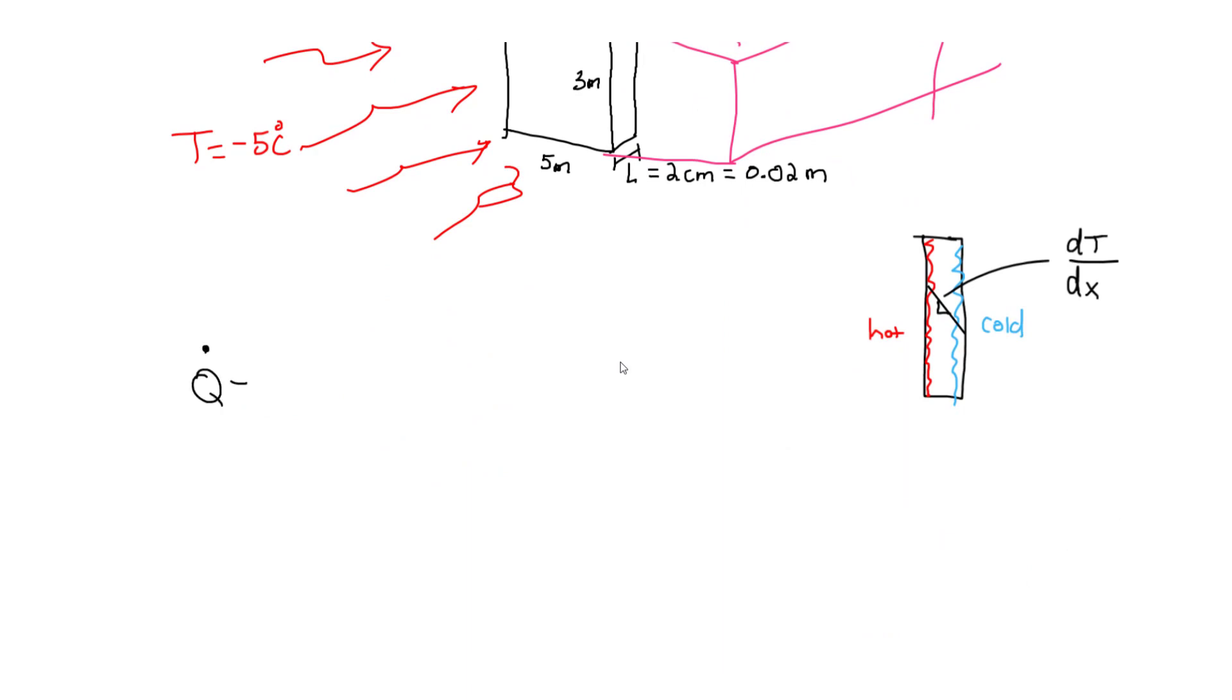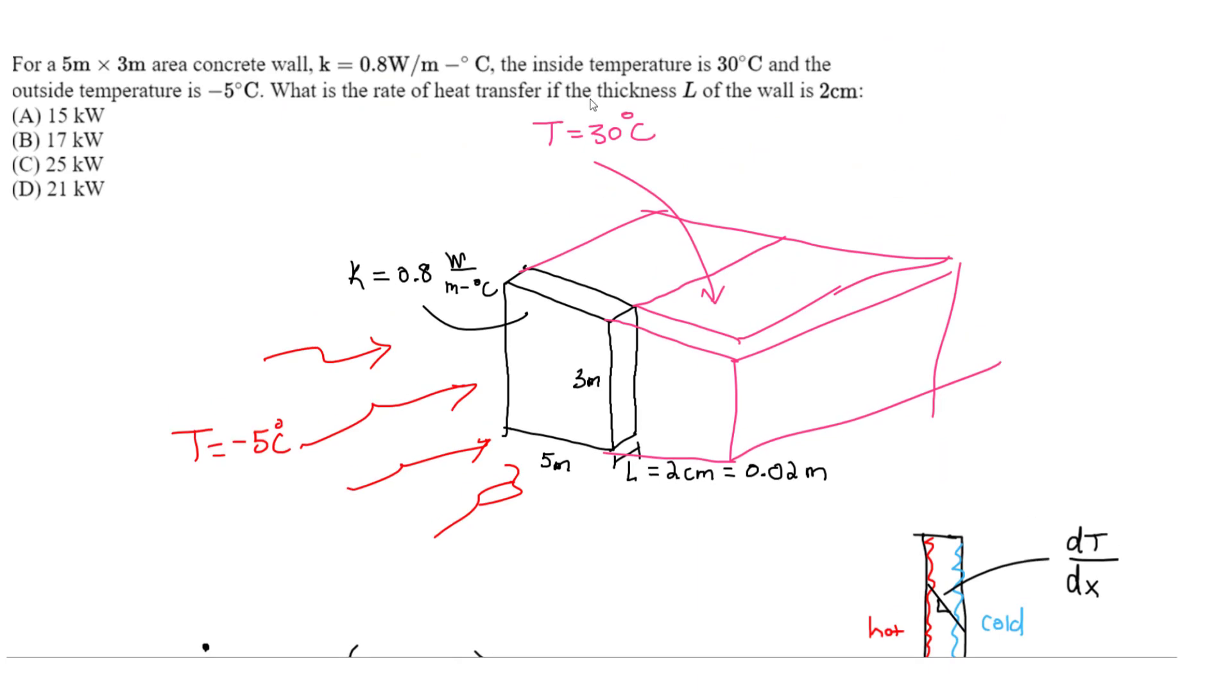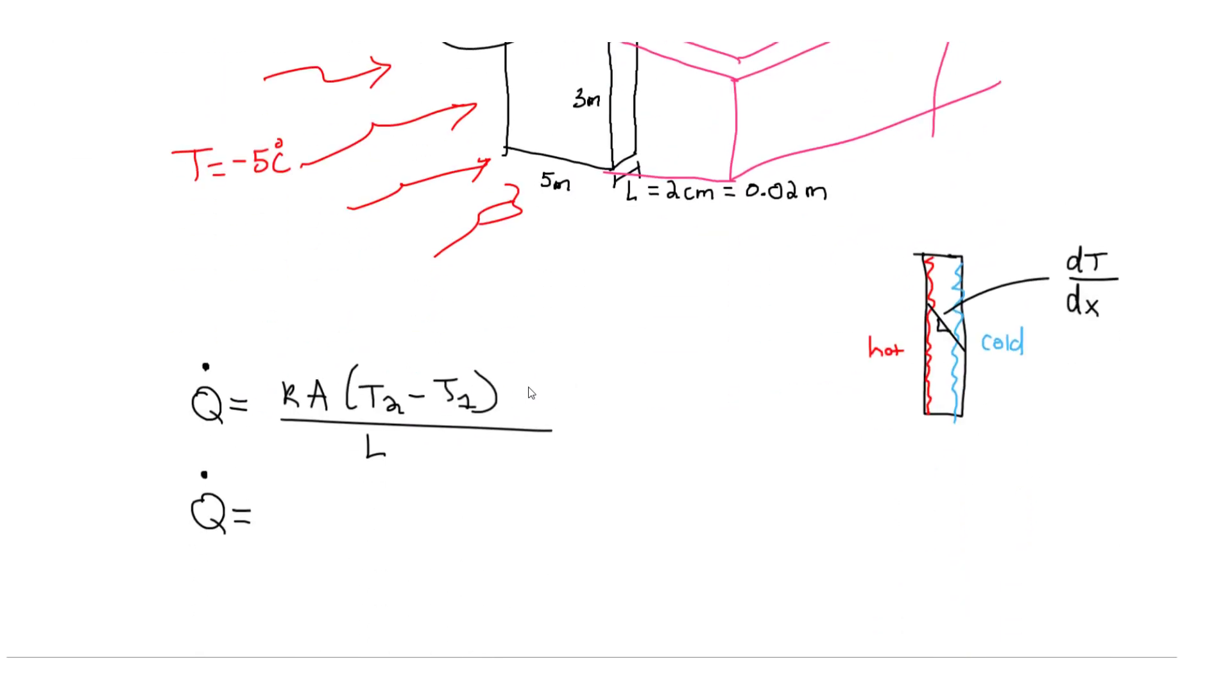So Q dot is going to be our K value times A times T2 minus T1 divided by our L value. So Q, which is the heat transfer that we will solve. Our K value is 0.8 watt per meter degrees Celsius. Our area is going to be 5 by 3, so 3 meters times 5 meters, the base times the height.